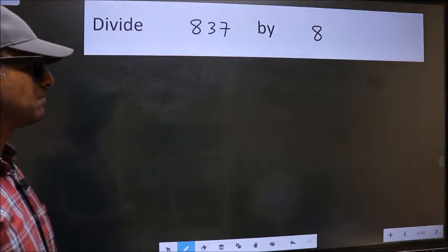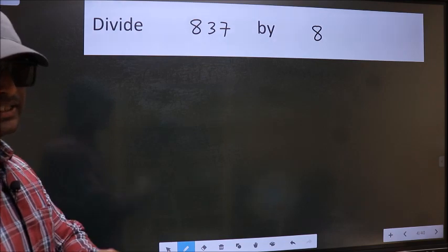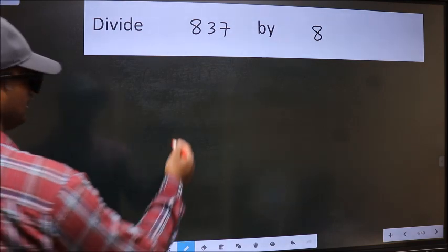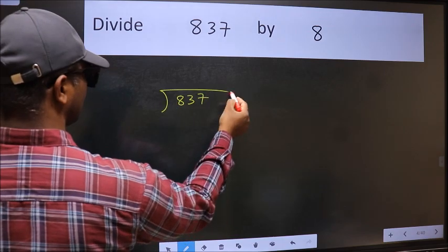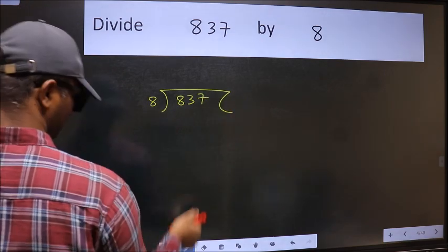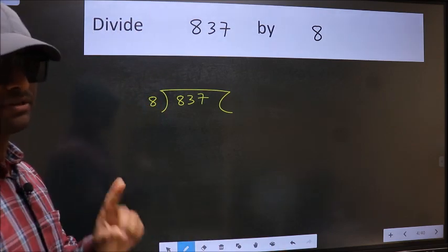Divide 837 by 8. To do this division, we should frame it in this way: 837 here and 8 here. This is your step 1.